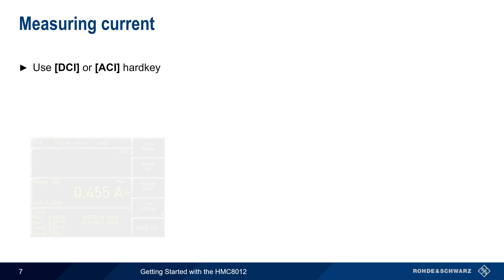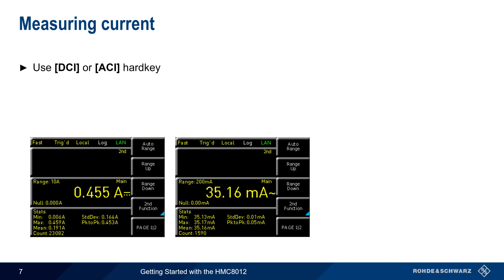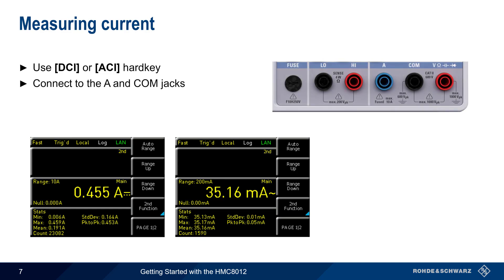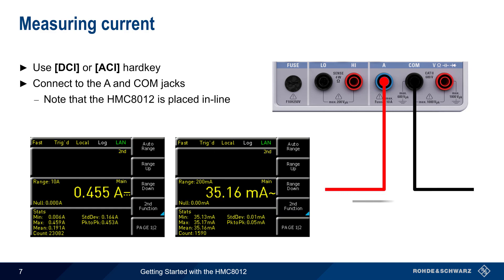Direct and alternating current are measured by pressing the DCI or ACI hard keys. A symbol following the result indicates whether the measured value is DC or AC. Connections to the circuit under test are made using the A and COM jacks. Note that the HMC 8012 must be placed in line with the current in order to measure it – the circuit must be broken and the current must flow through the HMC in order to make a current measurement.